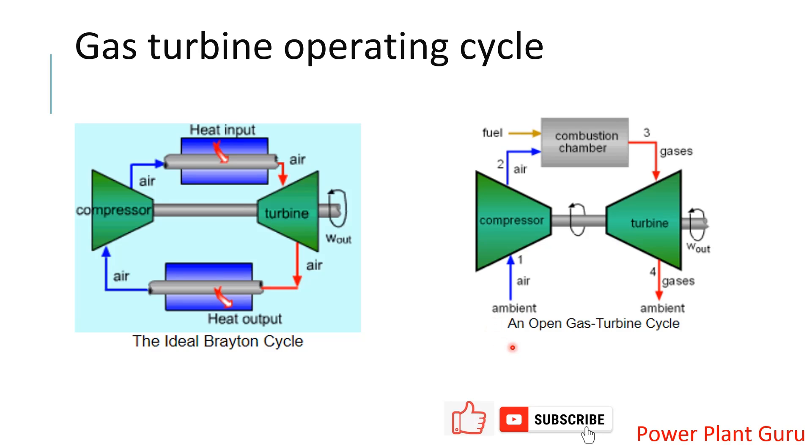In industrial gas turbines, we cannot take the same gases which are coming from the turbine and reuse them because they are already at a very high temperature. Here we need the ambient air which is clean enough and cold enough to compress.